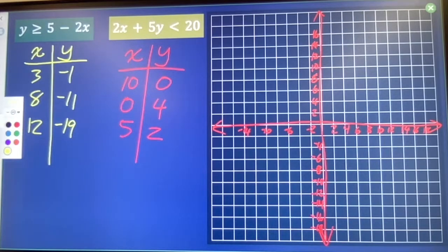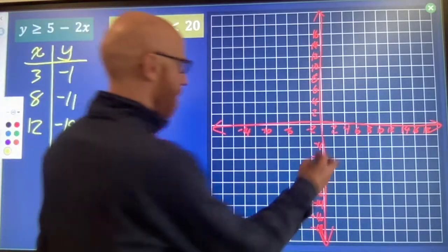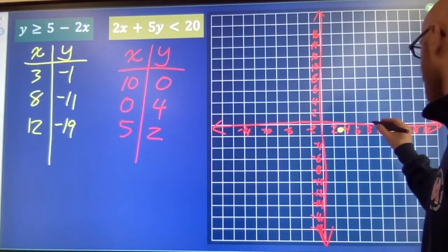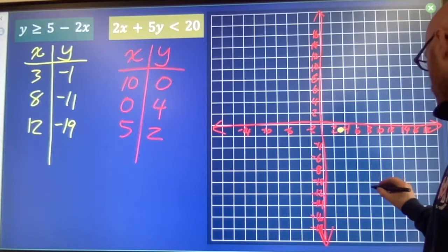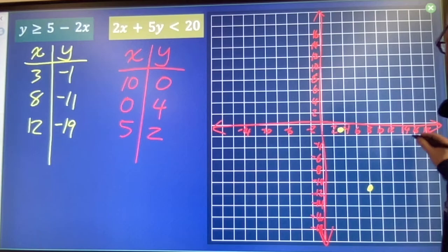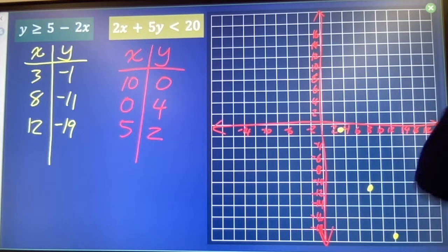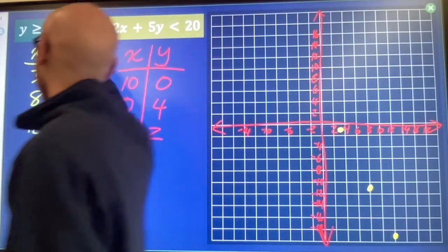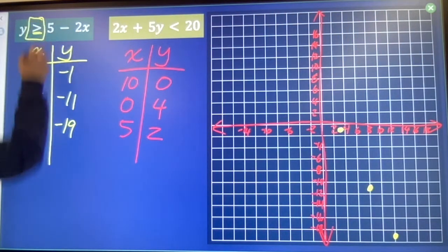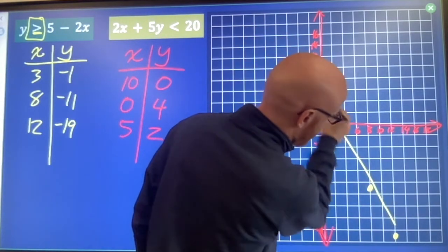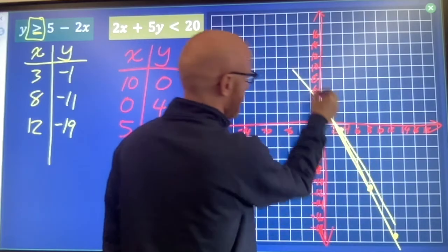Grabbing my yellow points. 3, negative 1, 8, negative 11, 12, negative 19. My points should line up. Before I connect my dots, I'm going to need to take a look at this symbol. If it includes an equals component, then I will use a solid line to connect my dots. Solid line to connect my dots.